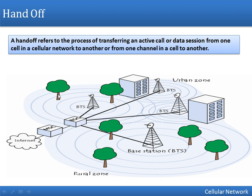In this diagram you can see we have one cell here, one cell here, and one cell here. These are base stations, and the coverage area of each station is known as a cell. When a person moves from one cell to another cell and has an active session, that session will be transferred to another cell without interruption. For example, a person is driving and connected to one base station while surfing the internet or on a call; when he moves to the next cell, he connects to the new base station.